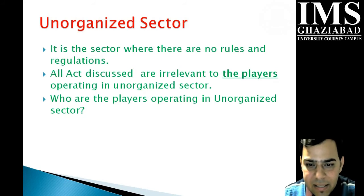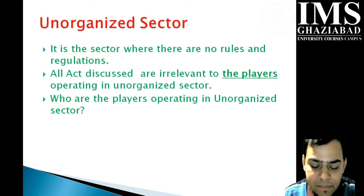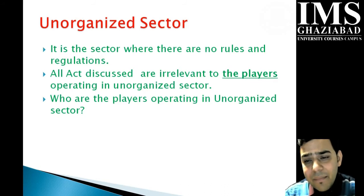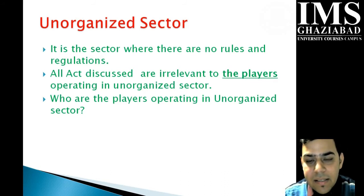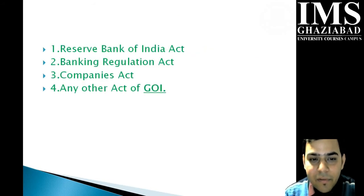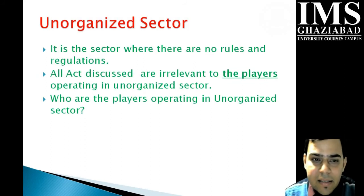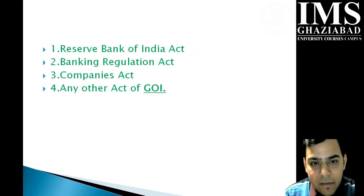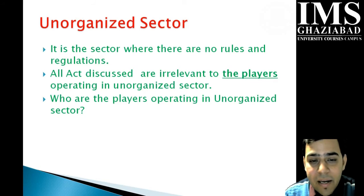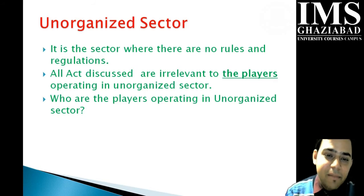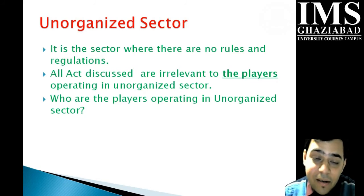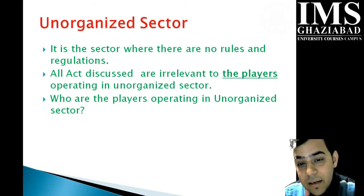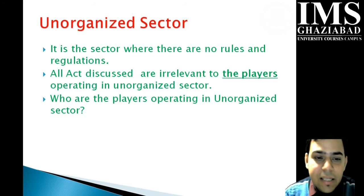The unorganized sector is where there are no rules and regulations — all the acts discussed are irrelevant here. This sector does exist in India, and our Prime Minister warns that everybody should come into the organized banking system. In the unorganized sector, the highest capping in the organized sector for personal loans is 16 to 18 percent, but in the unorganized sector, lending is done at a much higher rate — sometimes 2 percent per month in urban areas, which is 24 percent per annum, and approximately 3 percent per month in rural sectors, which comes to 36 percent per annum.